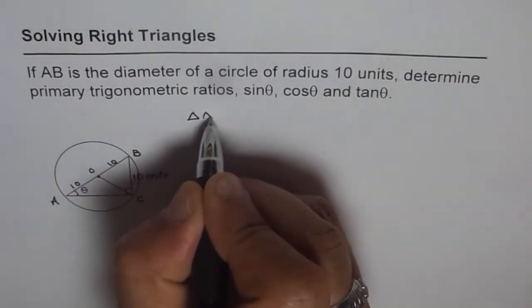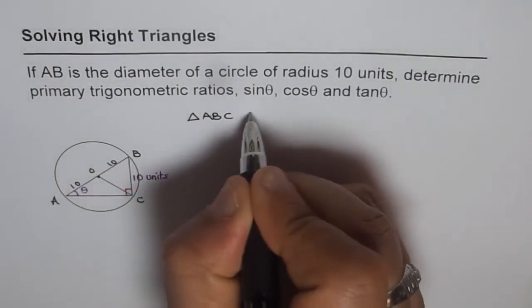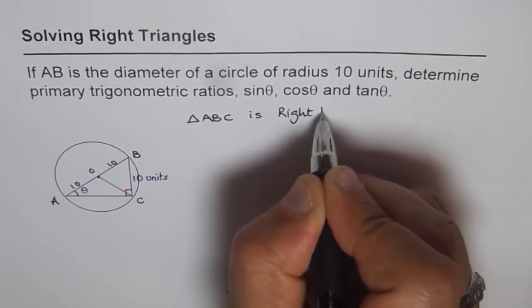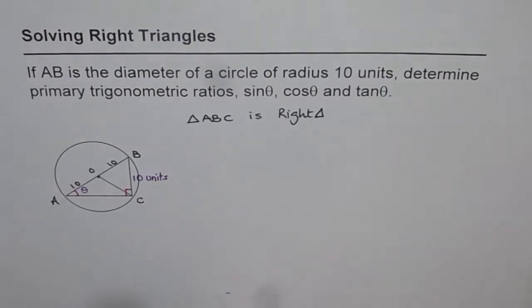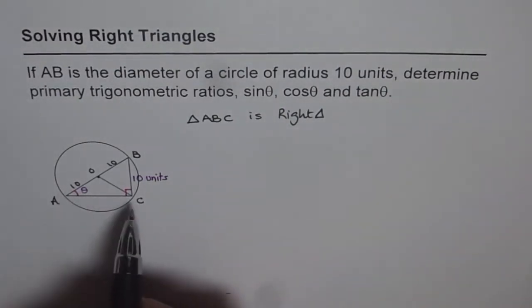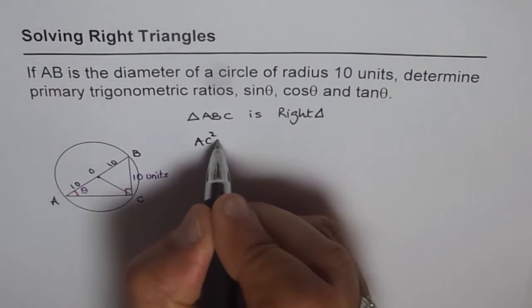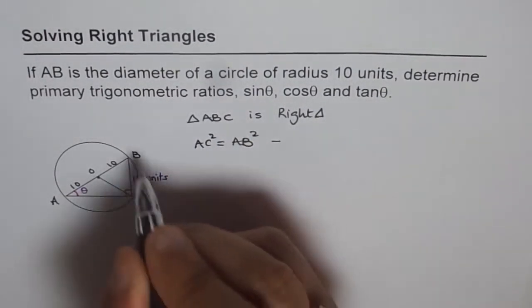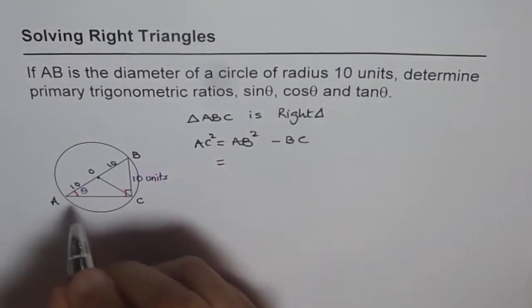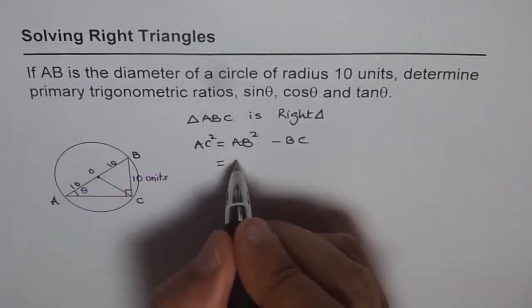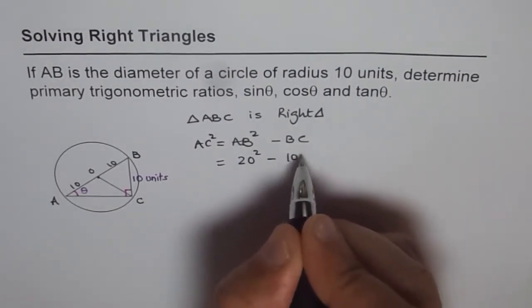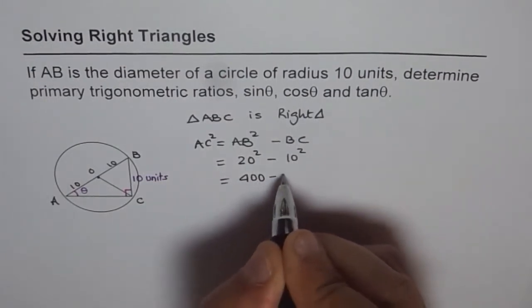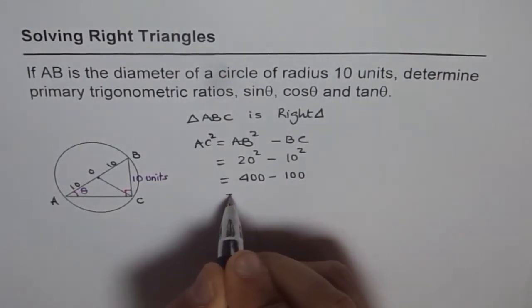We know triangle ABC is a right triangle. Since it is a right triangle, we can find what AC is. We know AC² is equal to AB² minus BC². That is AB is 10 plus 10, 20. 20² minus BC is 10, 10². That gives us a value 400 minus 100, and that equals 300.